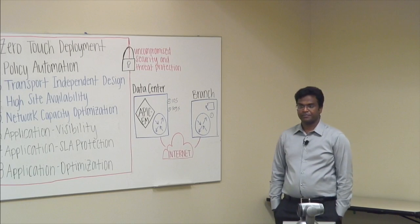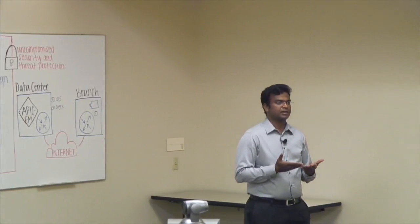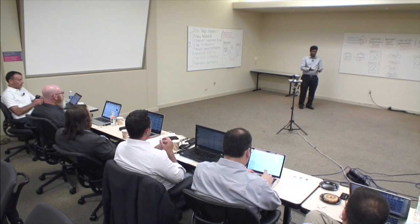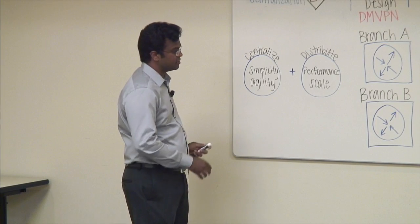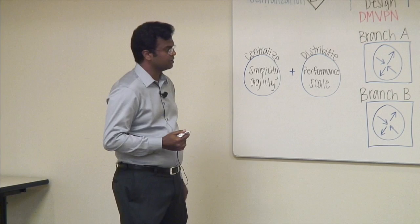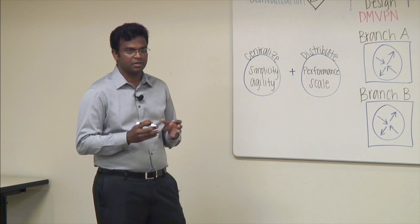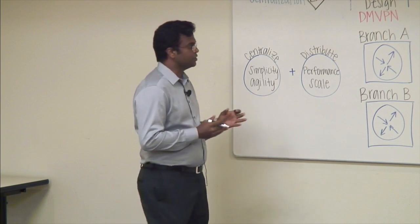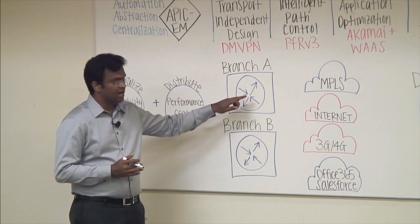Transport independent design. For you to actually build a network architecture and have real true agility, you want to make yourself completely agnostic to the underlying transport. Whether it is MPLS, internet, 3G, 4G, or dual MPLS, the first thing you want to do is create a transport independent design so that you can overlay and enable your network policy or business policy on top of it. The first step we do is we will hide the underlay away.